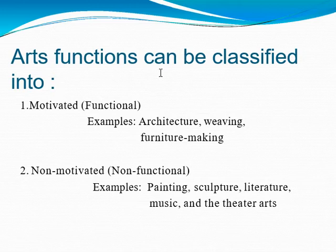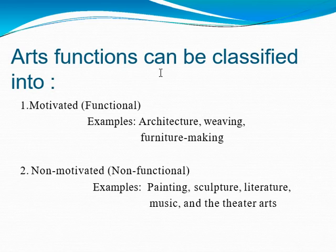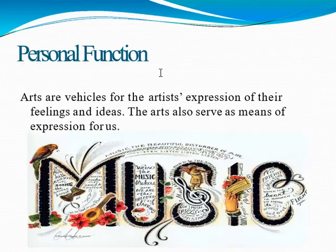The functions of art can be classified into motivated and non-motivated. For motivated art, it is synonymous with the word functional. Examples are architecture, weaving, and furniture making — they are functional in a way. The next is non-motivated art, also called non-functional. Good examples of non-motivated art are paintings, sculpture, literature, music, and theater arts. Now let's first discuss personal function.